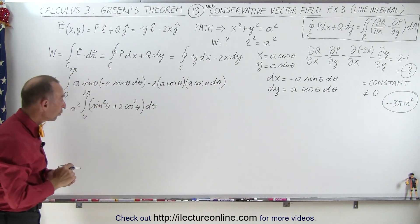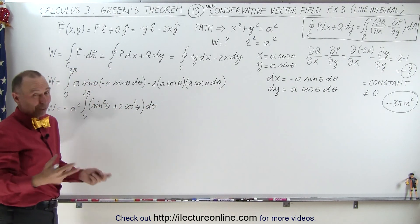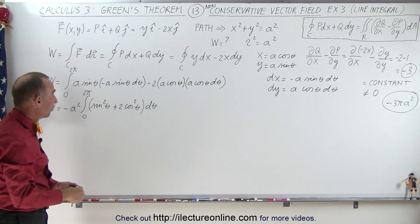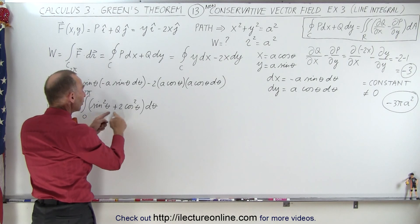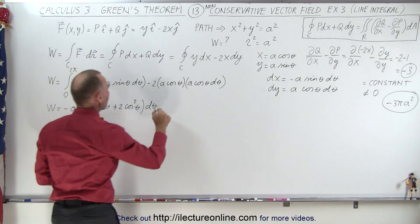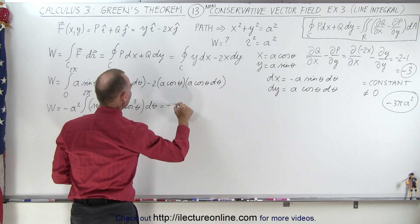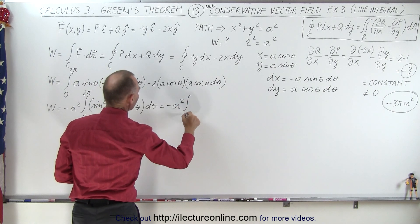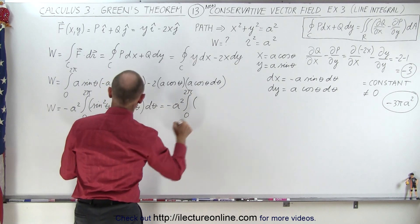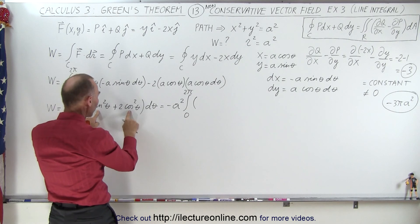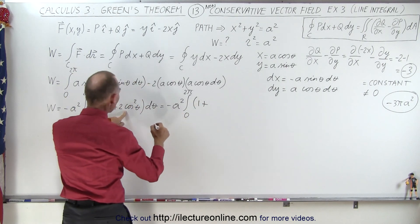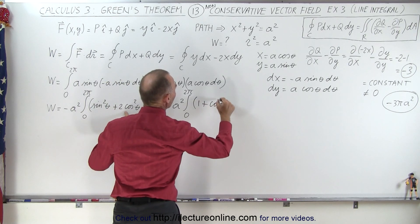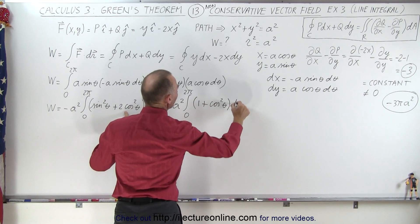Alright, so notice we have two of these, unfortunately not just one but we do have a sine square of theta plus 1 cosine square of theta which is equal to 1 and then we have 1 left over. So this becomes equal to minus a squared times the integral from 0 to 2 pi of, so the sine square of theta plus 1 of these, cosine square of theta is equal to 1 plus we have 1 cosine square of theta left, cosine square of theta d theta.